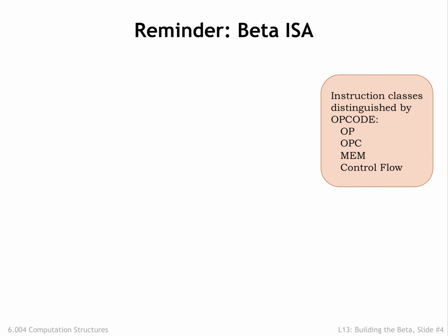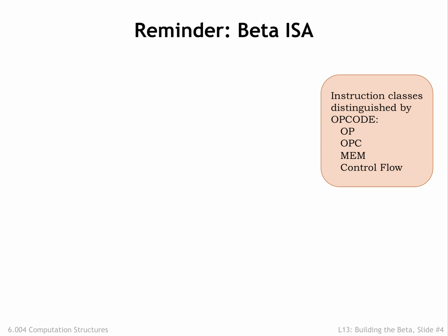Here's a quick refresher on the beta ISA. The beta has 32 32-bit registers that hold values for use by the datapath. The first class of ALU instructions, which have 1-0 as the top 2 bits of the opcode field, perform an operation on two register operands, RA and RB, storing the result back into a specified destination register RC. There's a 6-bit opcode field to specify the operation and three 5-bit register fields to specify the registers to use as source and destination.